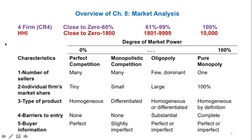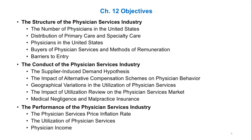We use a scale to determine market power for the industry. By looking at the number and distribution of physicians, barriers to entry, and other characteristics, we can determine whether physicians in the United States currently have market power. The objectives of Chapter 12 are to analyze the physician services industry through the structure, conduct, and performance framework.